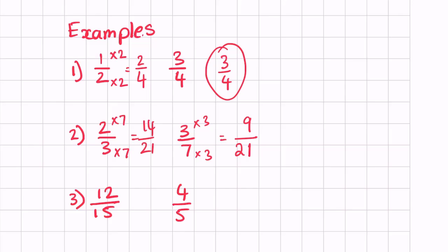Now we have two fractions with the same denominator: 14 over 21 and 9 over 21. Clearly we can see 14 is larger than 9, so 14 over 21 is the bigger fraction. Therefore the answer is two thirds is the larger fraction.